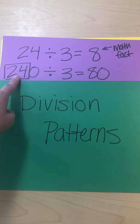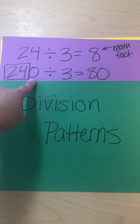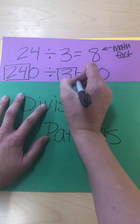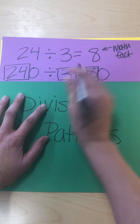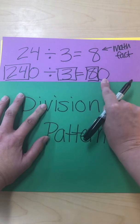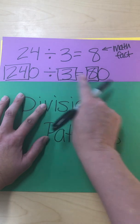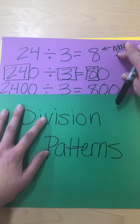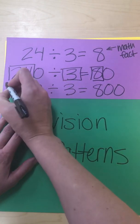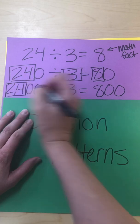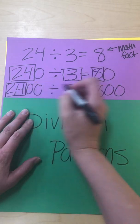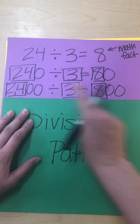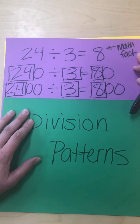We still have 24, but there's a 0 here now. So it's 240 divided by 3. It's still 8, right? But since we have a 0 here, we have to add a 0 to the end. 24 divided by 3 is 8, and add the 0 to the end is our answer. So let's do that again. And I'm going to put a box around 24 so you can see what math facts we're doing. 24 divided by 3 is still 8, but there's two zeros, so we add two zeros to our answer.